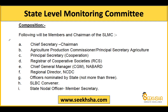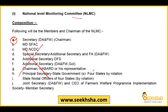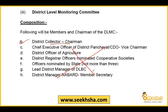The State Level Monitoring Committee is chaired by the State's Chief Secretary. The District Level Monitoring Committee is chaired by the District Collector (DC). You only need to remember the chairpersons at each level: National — Secretary, Department of Agriculture and Farmers Welfare; State — Chief Secretary; District — District Collector.